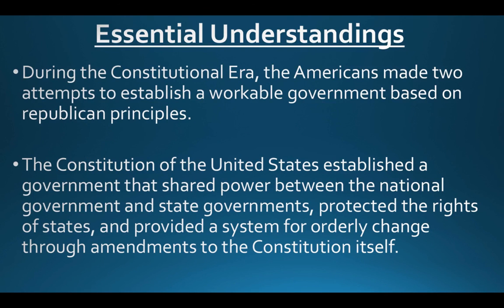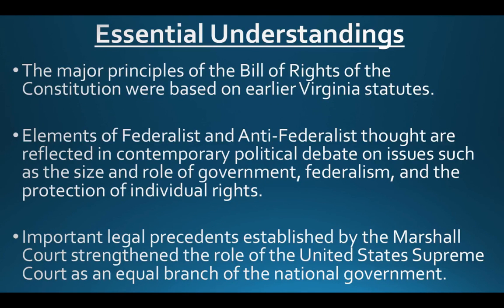The essential understandings Virginia wants you to know: during the constitutional era, Americans made two attempts to establish a workable government based on Republican principles. The Constitution established a government that shared power between the national government and state governments, protected the rights of states, and provided a system for orderly change through amendments. Additionally, the major principles of the Bill of Rights were based on earlier Virginia statutes, and elements of Federalist and Anti-Federalist thinking are reflected in contemporary political debate on issues such as the size and role of government, federalism, and the protection of individual rights.